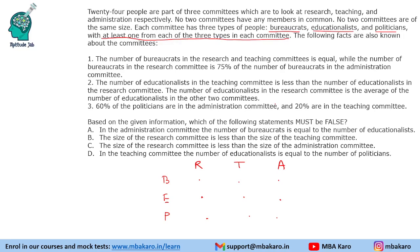Now let us look at the conditions given. The number of bureaucrats in the research and teaching committees is equal, while the number of bureaucrats in the research committee is 75% — that is three-fourths — of the number of bureaucrats in administration. So let us say the administration committee has 4x bureaucrats, research has 3x, and teaching also has 3x. Total is 10x. If we put 20, we cannot fill the minimum values, so the only possibility is 10, giving us 3, 3 and 4.